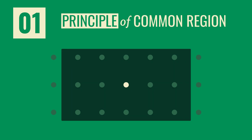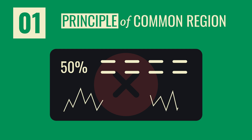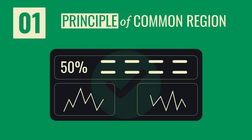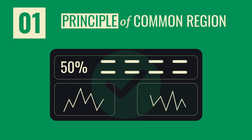Let's take a look at an example. We have a kind of a dashboard where we see some data at the top and two charts at the bottom. One way to apply the principle of common region would be to define clear areas for each group so that users can identify each group quicker. Here we have a clearly defined area for the top data, and then the two charts with borders so we can clearly see the three groups.